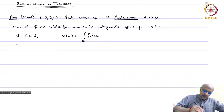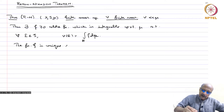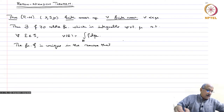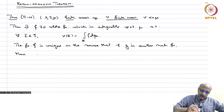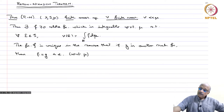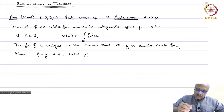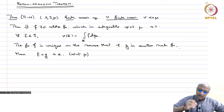So you have two finite measures on a measurable space, and ν is absolutely continuous with respect to μ. Then the only way ν can be constructed is via a non-negative integrable function, namely ν(E) equals the integral over E of f dμ. The function f is unique in the sense that if g is another such function, then f equals g almost everywhere with respect to μ.